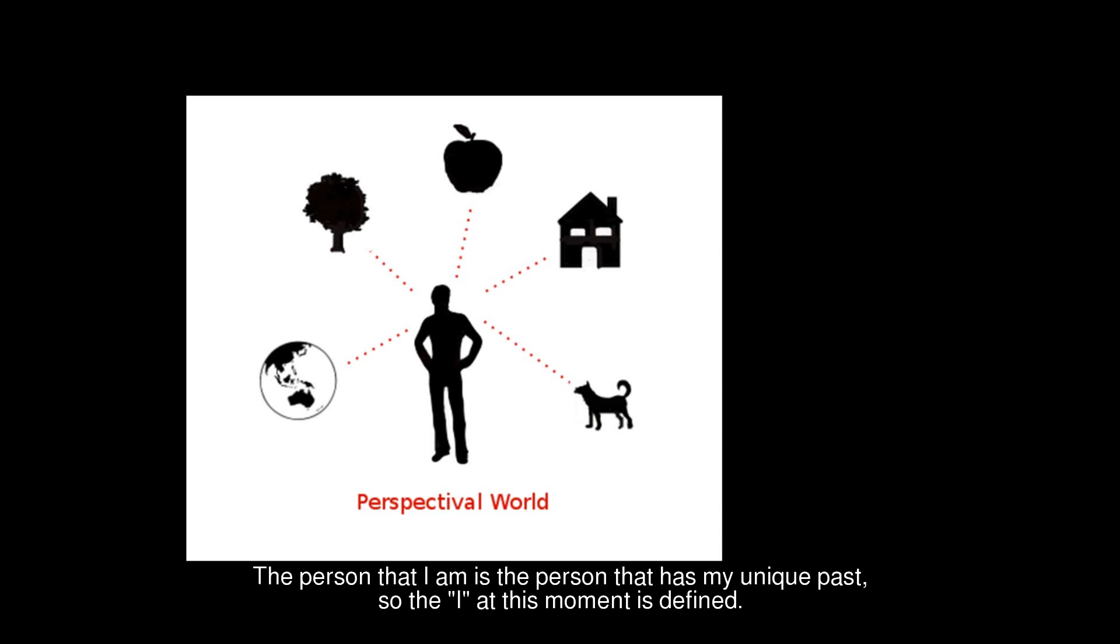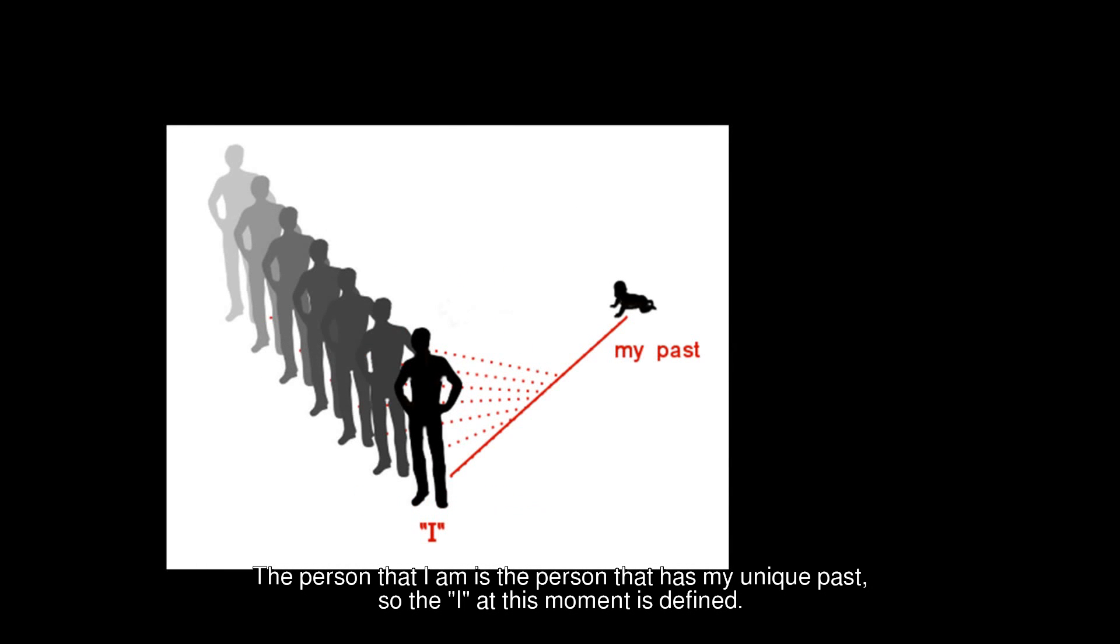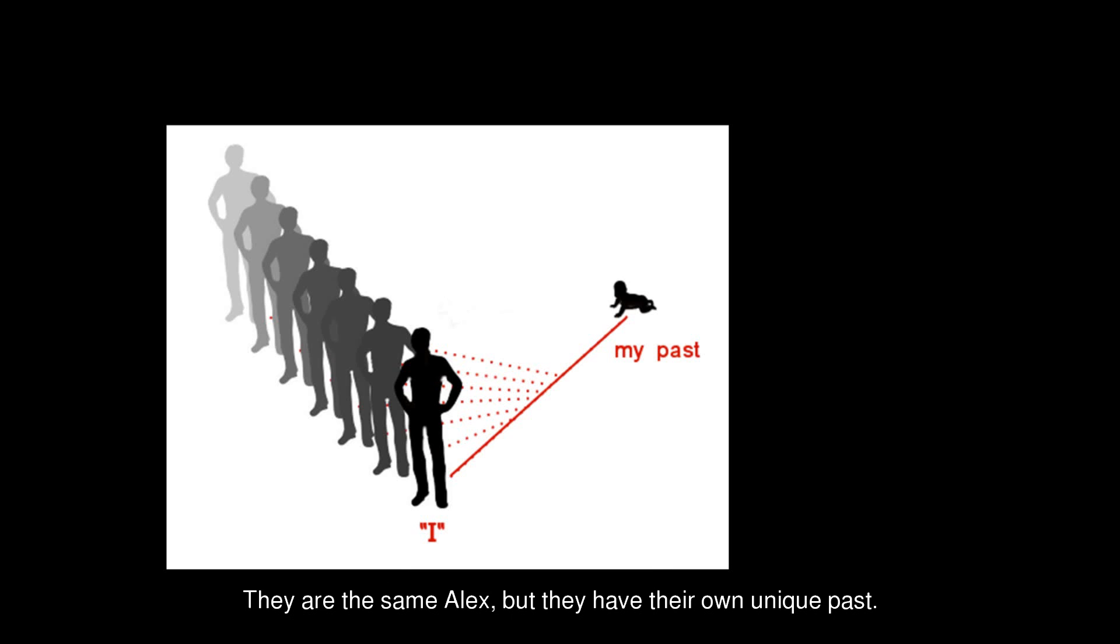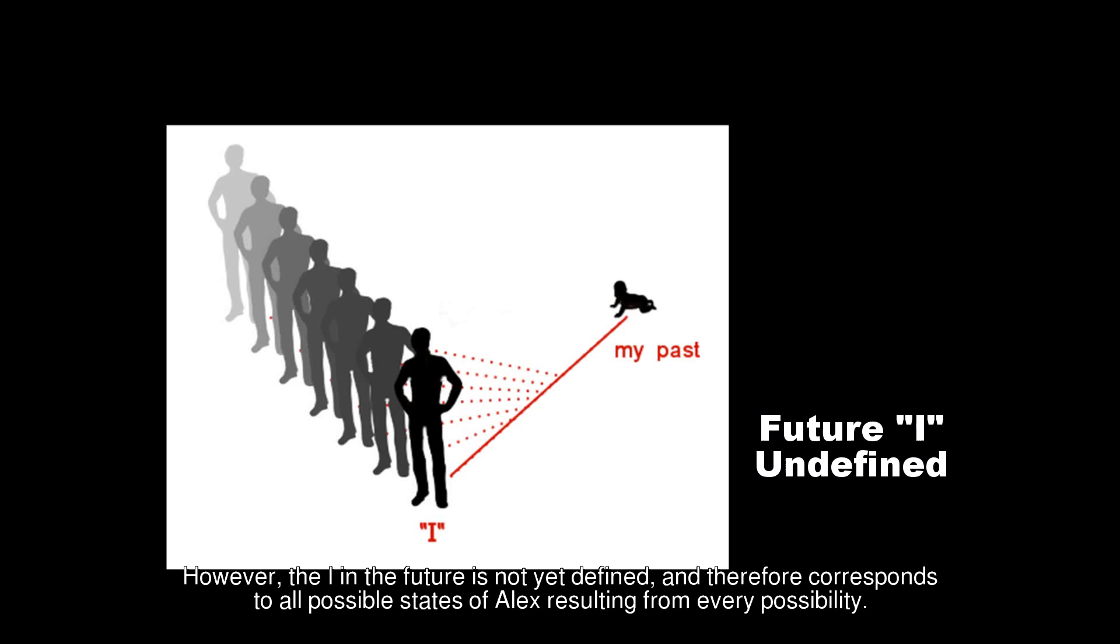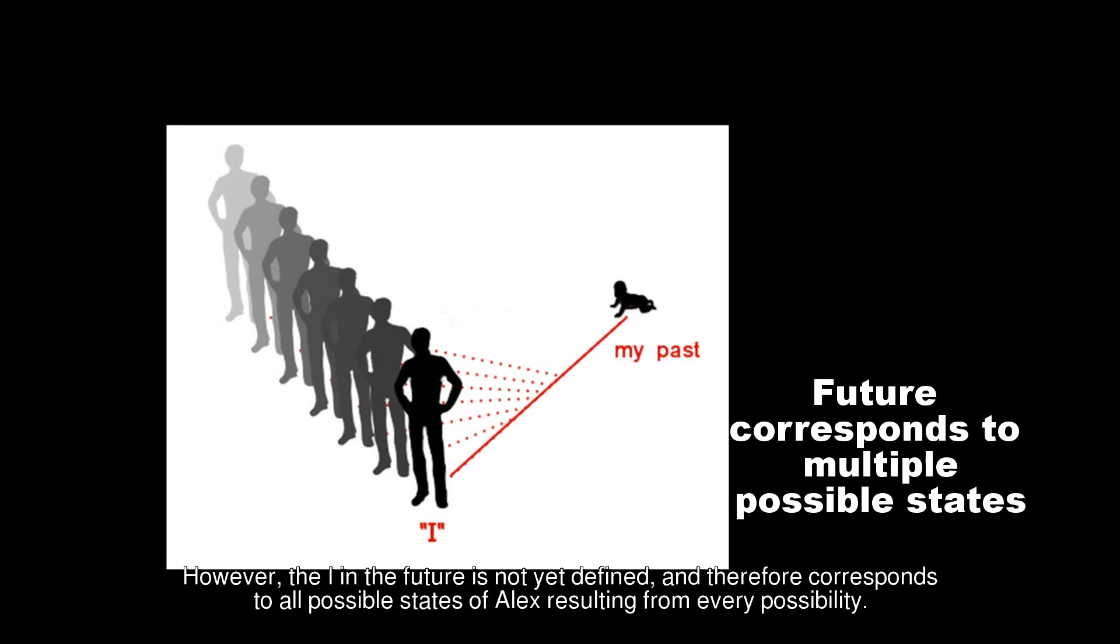The person that I am at this moment in time is the person that has my unique past. So the I at this moment is defined. There are an infinite number of other Alex's in parallel worlds, but these are not I. They are the same Alex, but they have their own unique past. However, the I in the future is not yet defined, and therefore corresponds to all possible states of Alex resulting from every possibility.